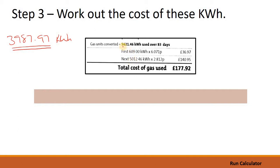Now, remember this is the old bill. As well as paying this £36.97 they are paying a further £140.95 for the rest of the kilowatt hours they used on that bill period. In that bill period they used a total of 5,621.46 kilowatt hours. We haven't used that many. We've only used 3,987.97 kilowatt hours.